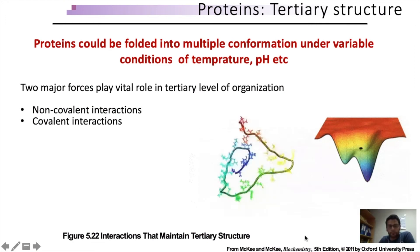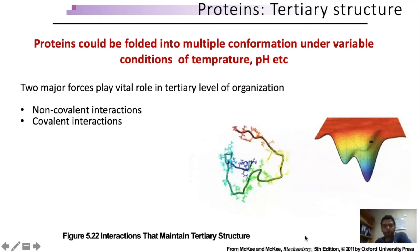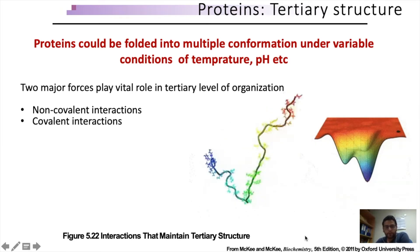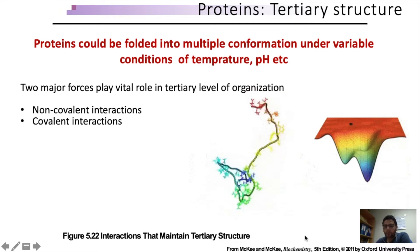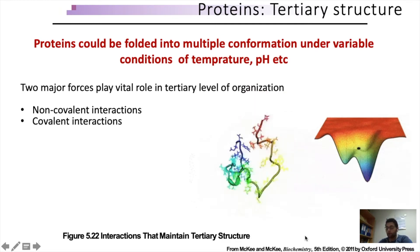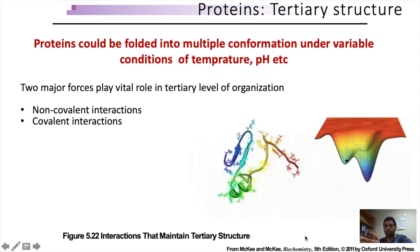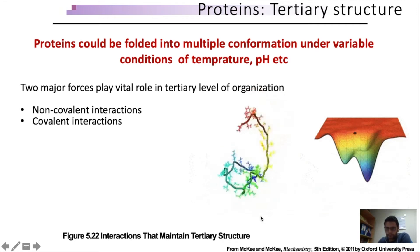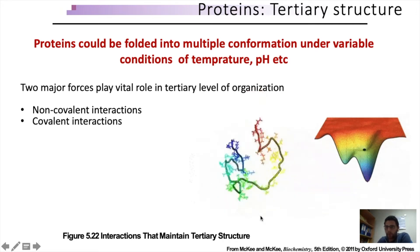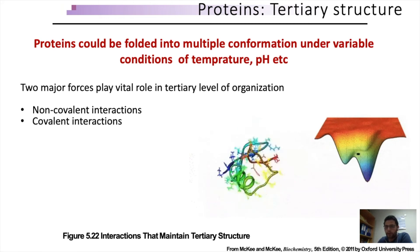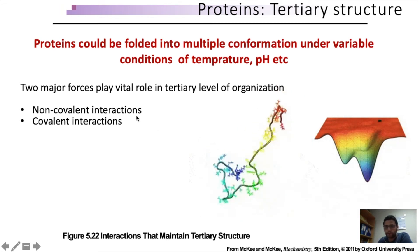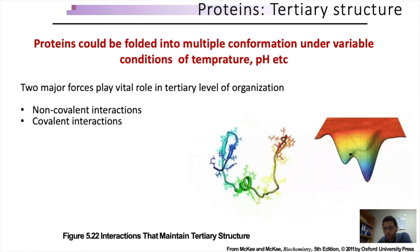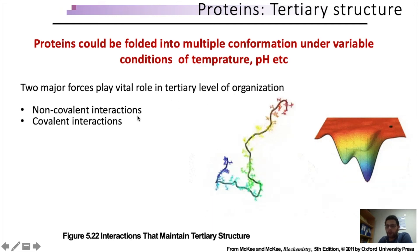Proteins can be folded into multiple conformations under variable conditions of temperature and pH. Even a one-degree change in temperature or one-unit change in pH could alter the overall conformation of the protein. Not all of these conformations are thermodynamically stable or functional — only the thermodynamically favorable conformation is functional. There are primarily two major types of forces that play a vital role at the tertiary level of protein organization: non-covalent and covalent interactions.